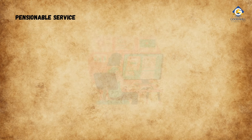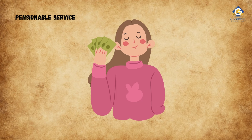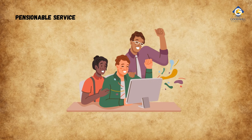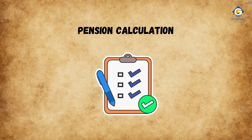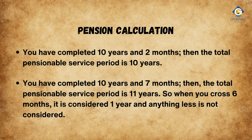Pensionable Service is the duration during which the employee serves or works. If an employee withdraws the entire corpus before fulfilling the minimum 10-year period, he will have to restart the whole process. If any employee has completed 20 years of service, 2 years will be added to his serviceable period — 20 plus 2 — as a reward. For pension calculation, the bar is set at 6 months. For example: if you have completed 10 years and 2 months, the total pensionable service period is 10 years. If you have completed 10 years and 7 months, the total pensionable service period is 11 years. So when you cross 6 months, it is considered 1 year, and anything less is not considered.